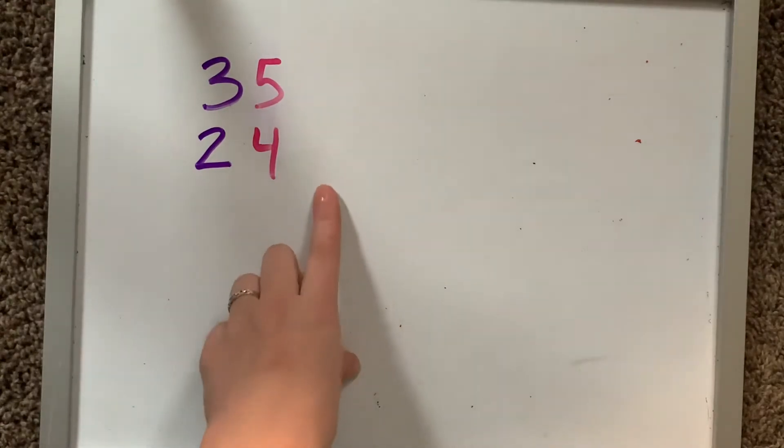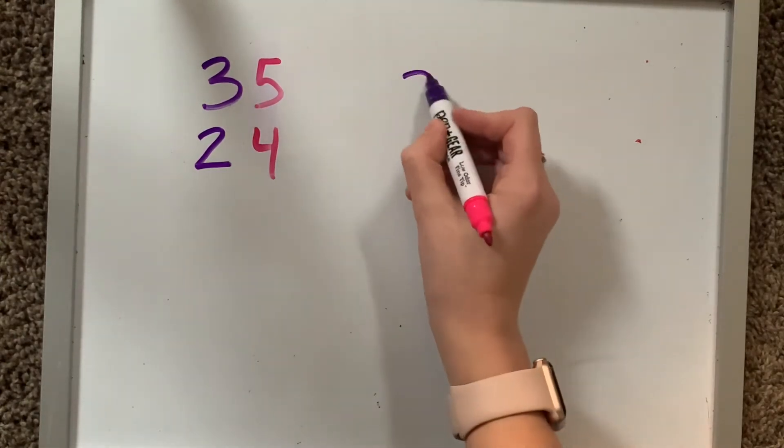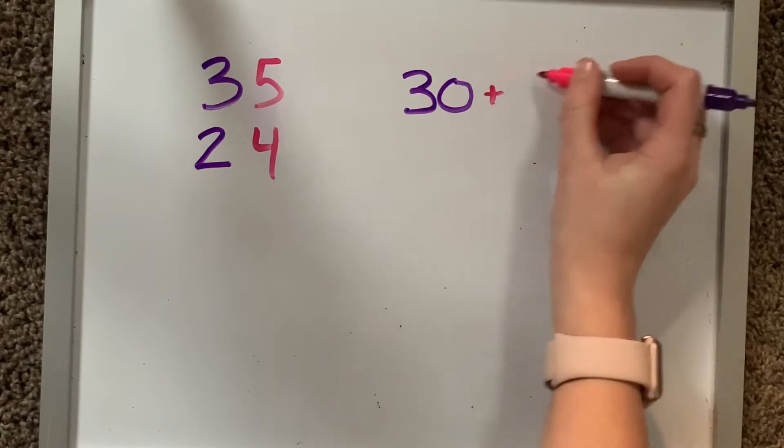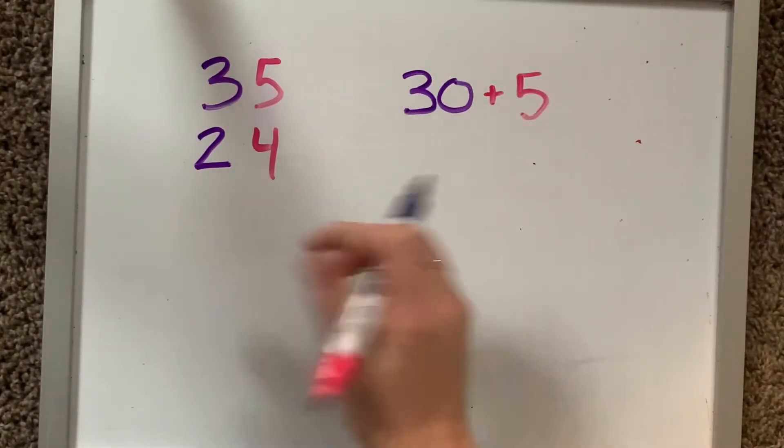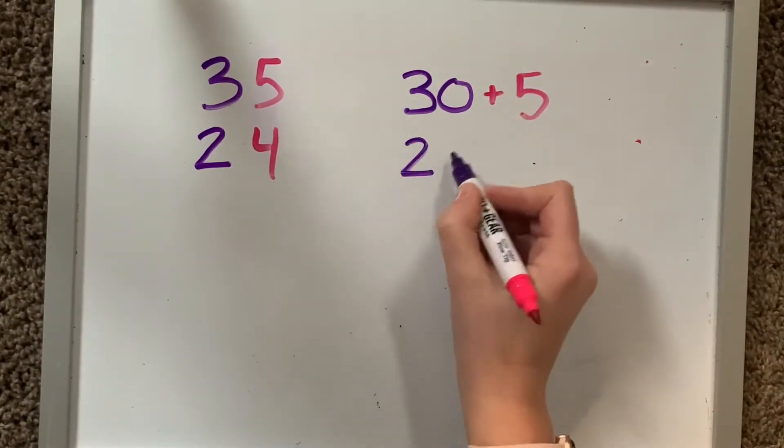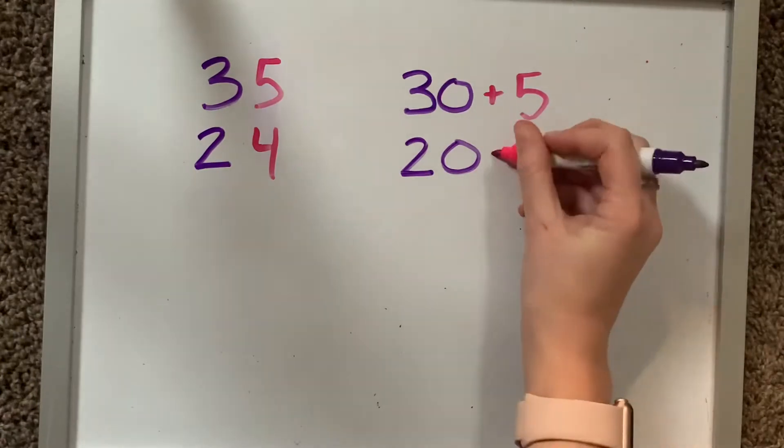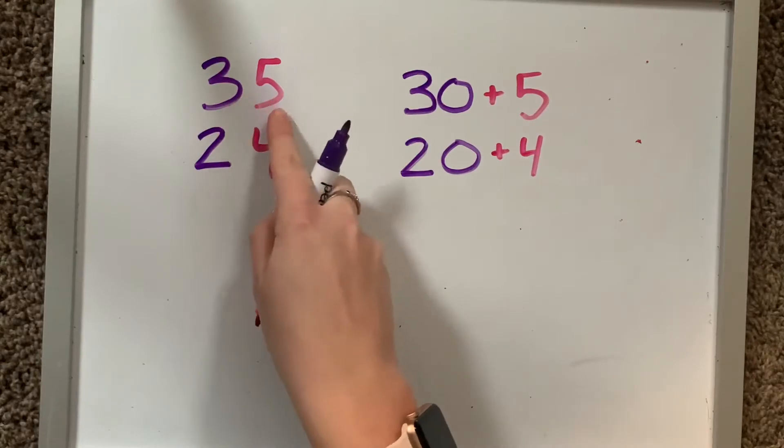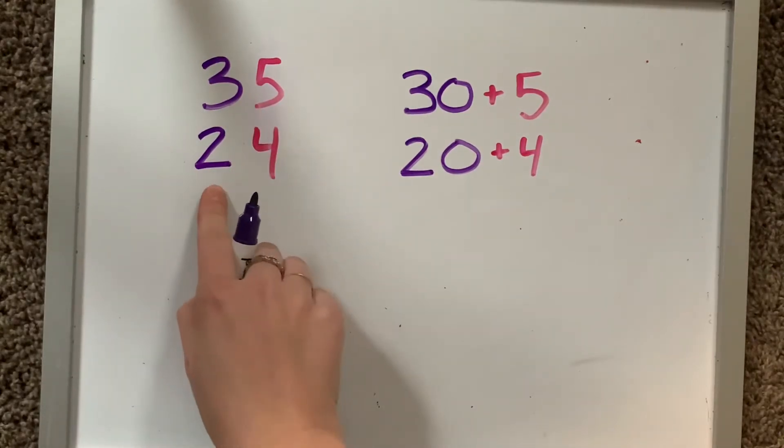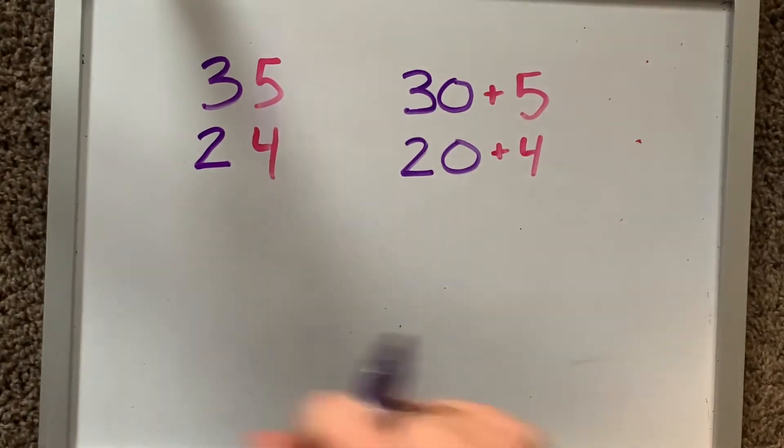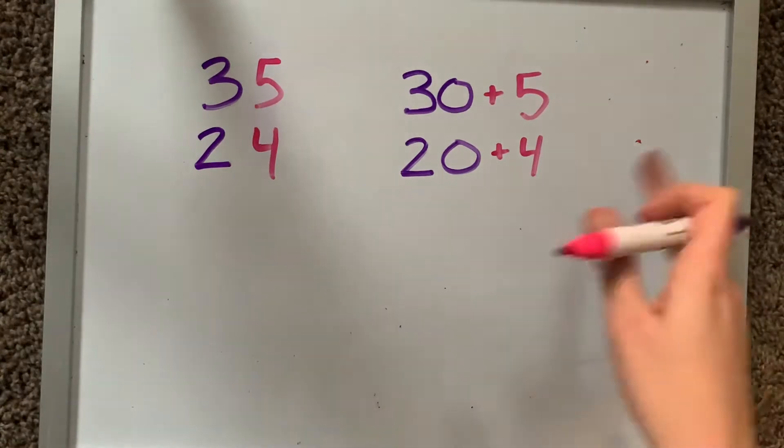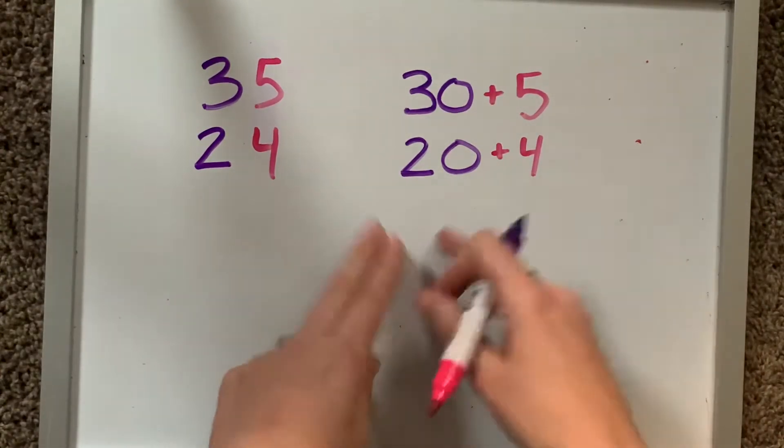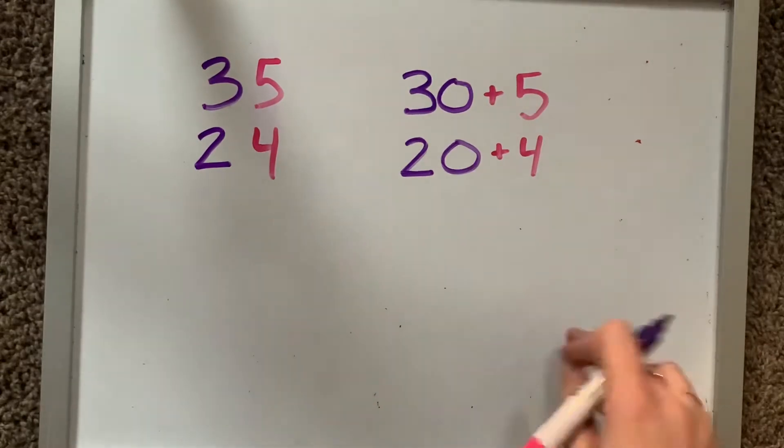I'm going to go ahead and put these into expanded form, which at this point we should all feel really comfortable with. 35, if I wanted that in the expanded form, I could say 30 plus 5. And 24 would be 20 plus 4. Because for 35, we know that there are three tens in there and five ones. 24, we know there's two tens and four ones. So this seems pretty normal. And these are only two digits. We can even do this into three digits. You guys are doing great with that.